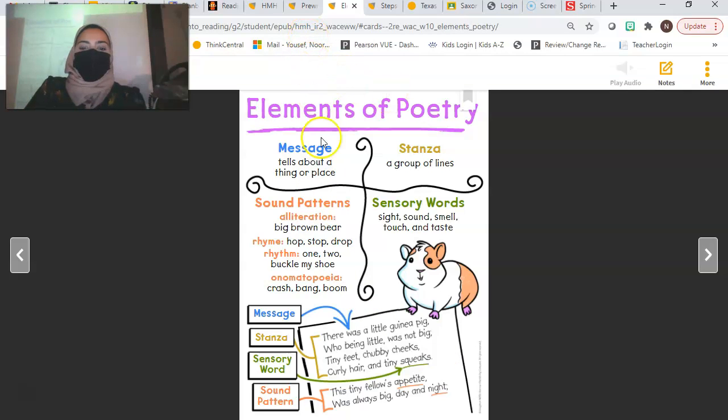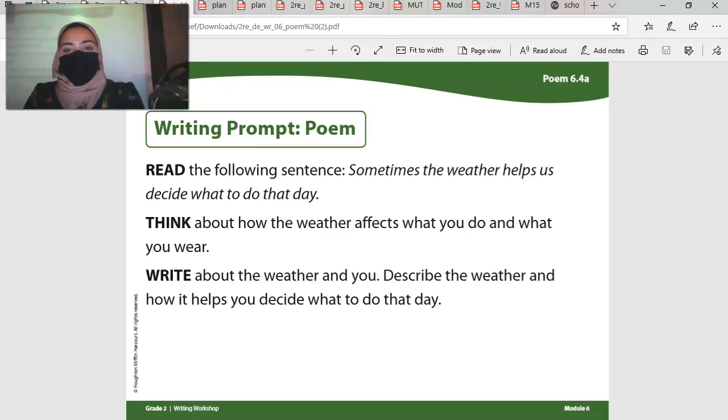So, that's an example of a poem. So, what we're going to be focusing on today is, sometimes the weather helps us decide what to do that day. Think about how the weather affects what you do and what you wear. When it's cold outside, what are things we like to do? Remember, we talked about that. Who can remind us? Amaria? We like to play in the snow. We like to drink hot drinks. We like to wear our jackets. We like to turn on the fireplace. Those are all things that we like to do in the cold.